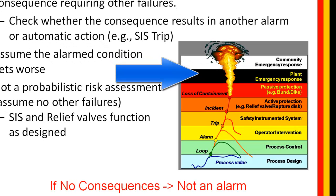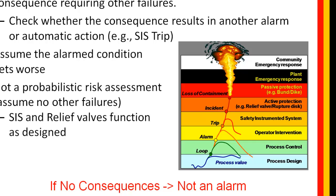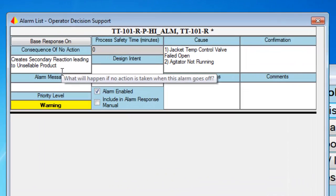As shown in the figure, the ultimate consequence would be a chemical release or explosion, while the direct consequence of the operator failing to respond to the alarm would be the trip of the safety instrumented system. Another important point about consequences: if you can't define what the consequence is, then there is probably no need for the alarm. Also, if the only consequence of the operator failing to respond is the creation of another alarm, then chances are both alarms are not necessary.